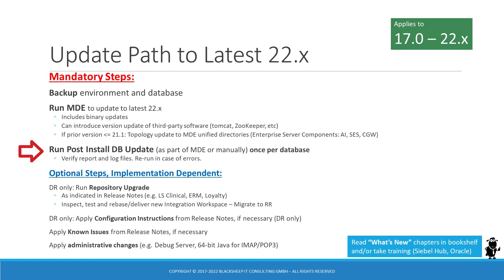The post-install database update must be executed once per database and imports schema changes, seed data, and open UI manifest data into the target database. Make sure to verify the report and the log files and rerun in case of errors before you continue. The repository upgrade utility is optional and can only be run against a development database. It should be run only if you intend to uptake the so-called non-mandatory changes made by Oracle, such as the recent CrowdTwist integration. The result is an integration workspace that contains the non-mandatory repository artifacts. Developers can then inspect and test the Oracle-manufactured objects and subsequently deliver them into the main branch or another integration branch.